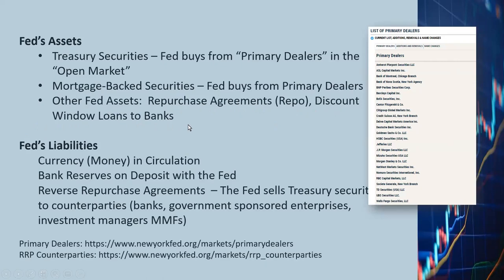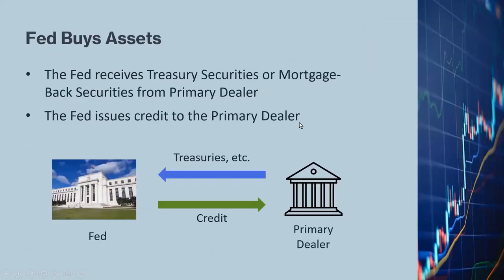On the other side of the balance sheet, the Fed has liabilities. That includes the money in circulation, bank reserves on deposit with the Fed, as well as reverse repurchase agreements. These are the treasury securities that the Fed sells to counterparties, which is the opposite of the Fed's assets.